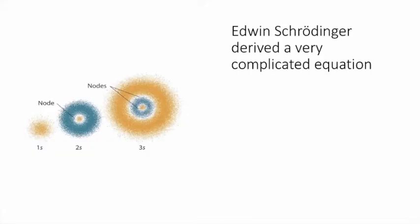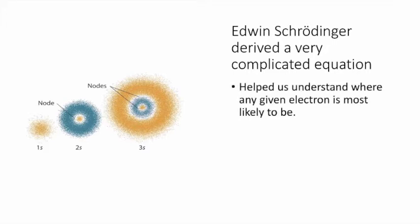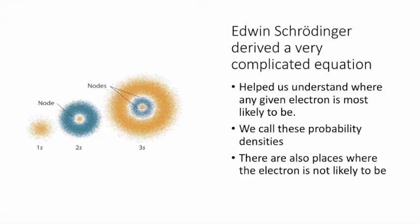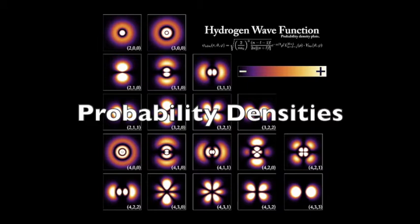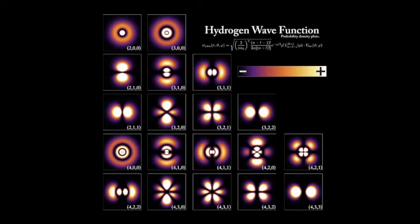Edwin Schrödinger derived a very complicated equation which helped us understand where any given electron is most likely to be. We call these probability densities. There are also places where an electron is not likely to be. When we talk about the quantum mechanical model, we talk about probability densities instead of orbits, because we never know for certain where a given electron is. We can only know where it is probably going to be about 90% of the time. We call these probability densities orbitals—not orbits, but orbitals.